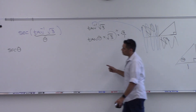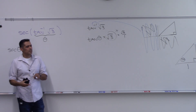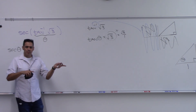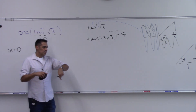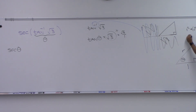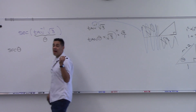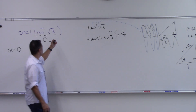We're looking for secant, which is the reciprocal of cosine. Cosine is adjacent over hypotenuse (x over r), so secant is hypotenuse over adjacent. I need to find r: 1² + (√3)² = r², giving 1 + 3 = 4, so r = 2. Secant is 2 over 1, which equals 2.